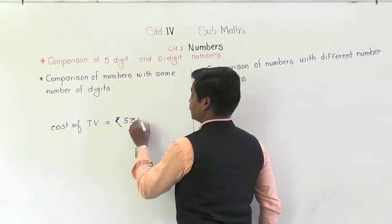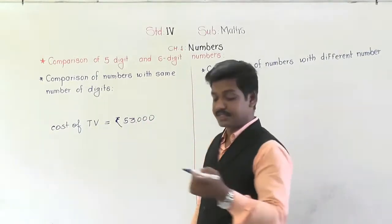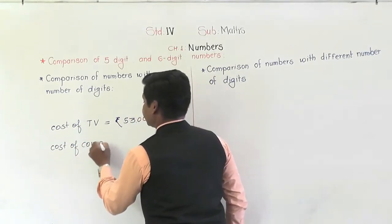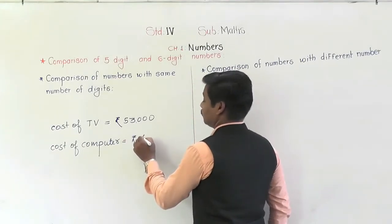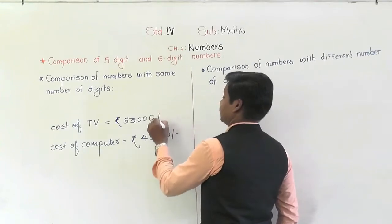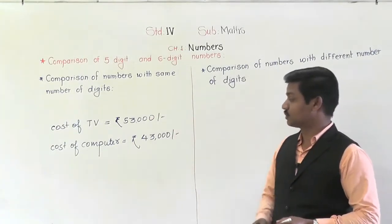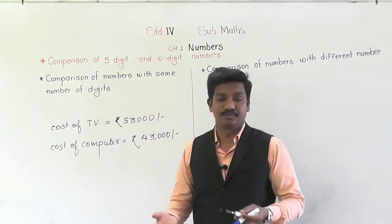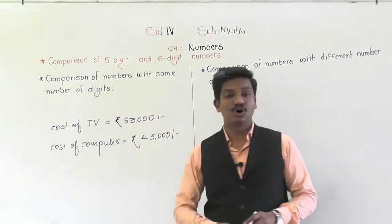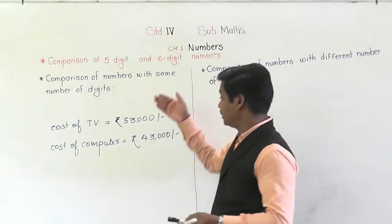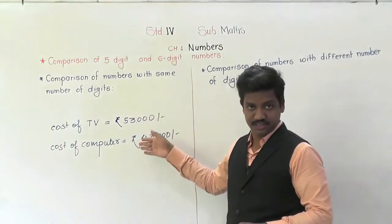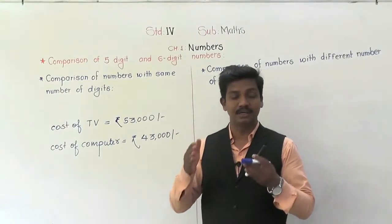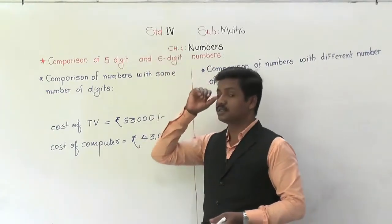Suppose you bought a TV at home — the cost of TV is rupees 53,000. And again you purchased a computer, so the cost of computer is rupees 43,000. So here, which item costs more? Whether the cost of TV is more or the cost of computer is more? To decide, we need to compare their cost — whether 53,000 is greater or 43,000 is greater. So for this we must know how to compare two numbers.